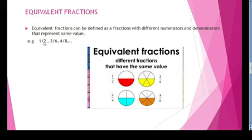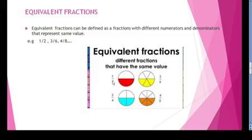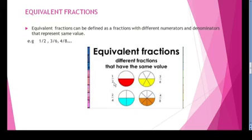For example, I have written 1 by 2, 3 by 6, and 4 by 8. Looking at the diagram: I have a circle divided into 2 parts and 1 is colored, giving 1 by 2. Then another circle with 6 parts and 3 colored, giving 3 by 6. Both represent the same value.